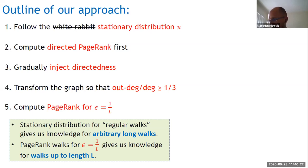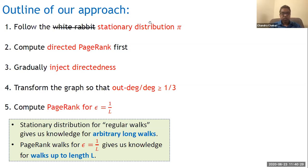PageRank walks for this setup of ε give us knowledge about walks up to length L — exactly what we need. By this I'll conclude. Thank you.